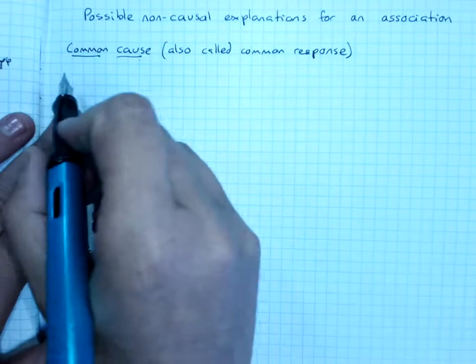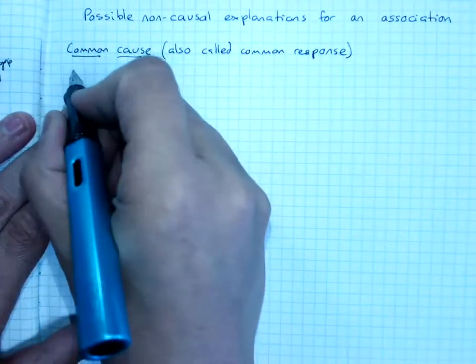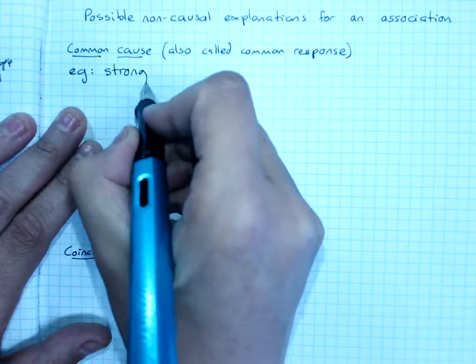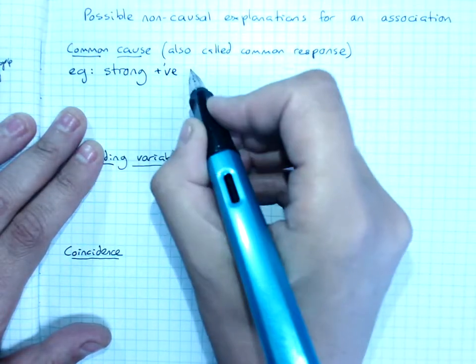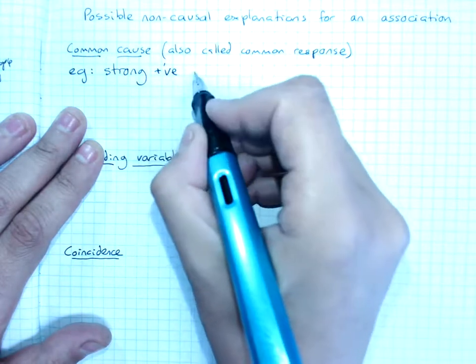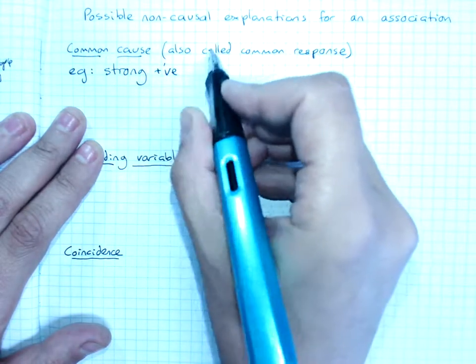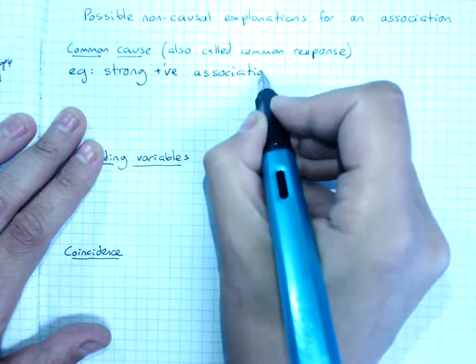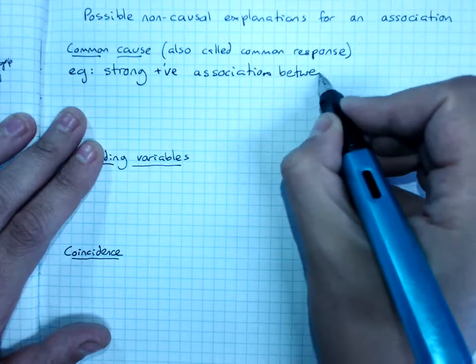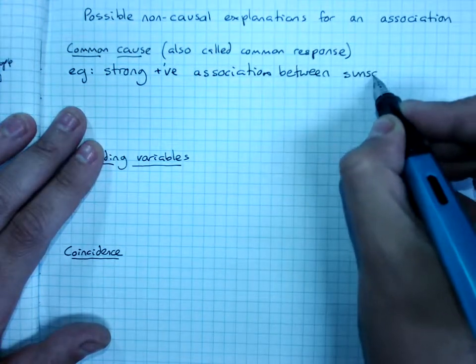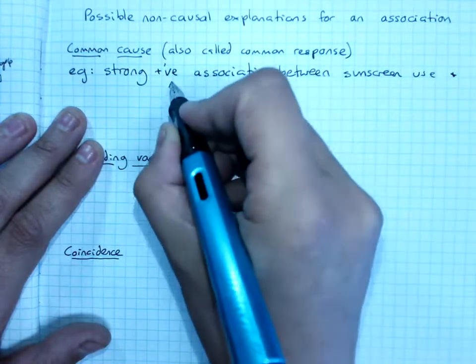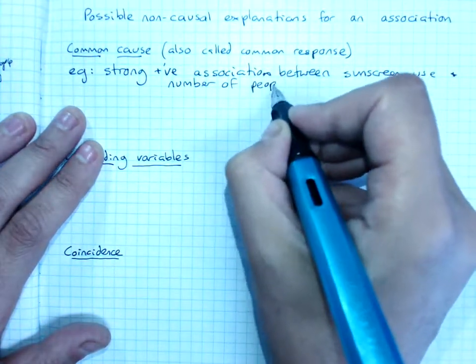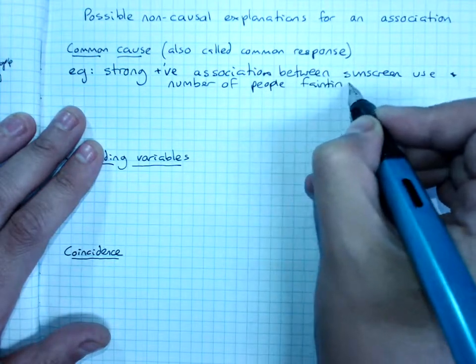One example is common cause, also called common response. And so there's a strong positive association between sunscreen use and number of people fainting.